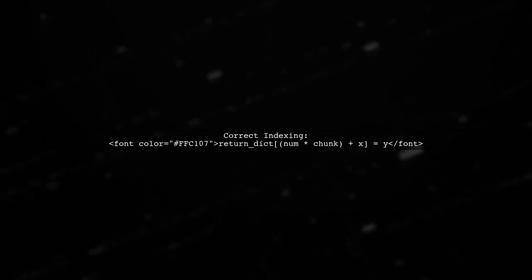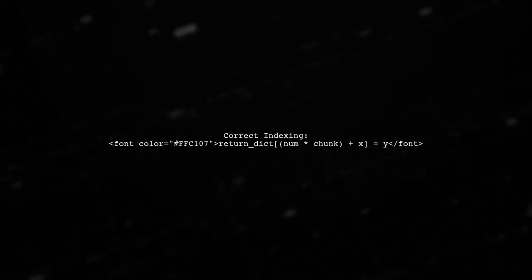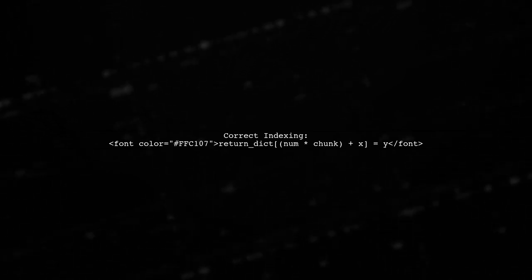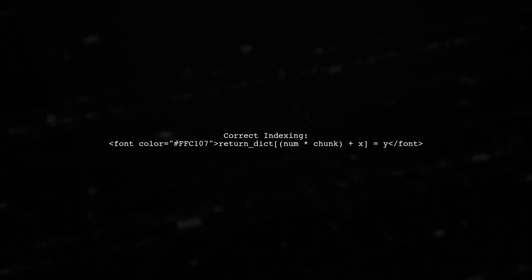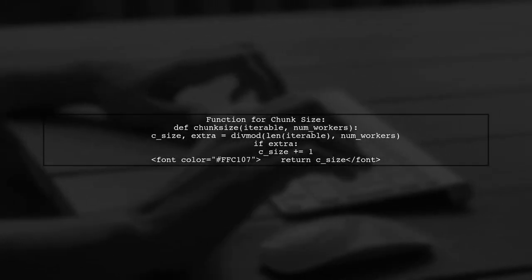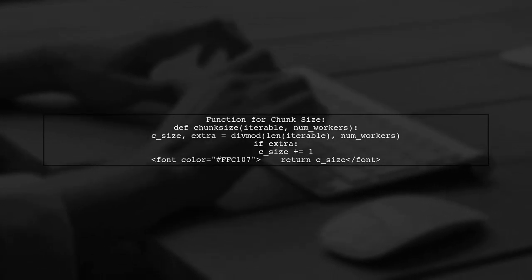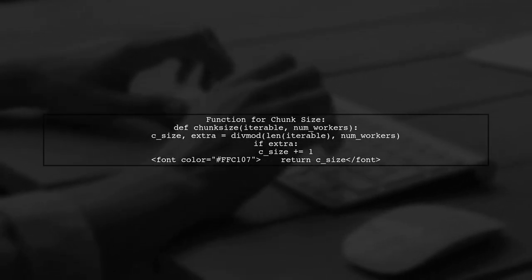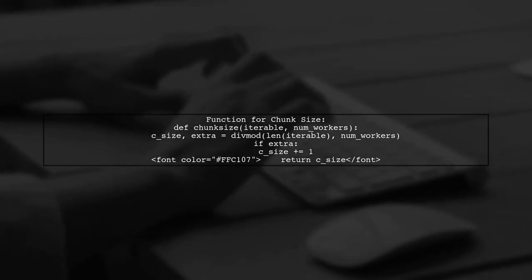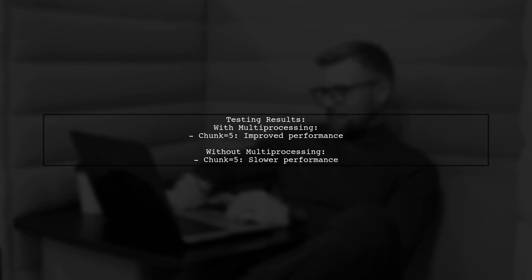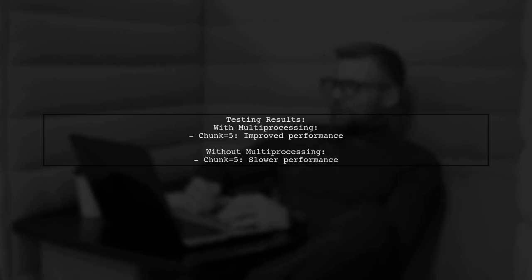Make sure to handle the indexing correctly. The return dictionary should reflect the correct indices to avoid overwriting results from different workers. When calculating chunk sizes, ensure you don't skip the first document. Use a proper function to determine the chunk size based on the number of workers. Testing results show significant differences in performance with and without multiprocessing, and adjusting chunk sizes can lead to better efficiency.